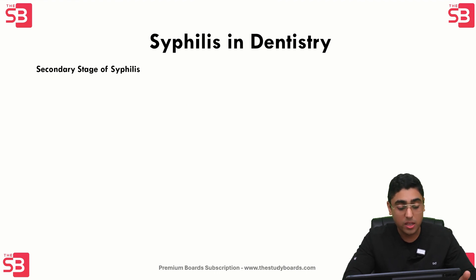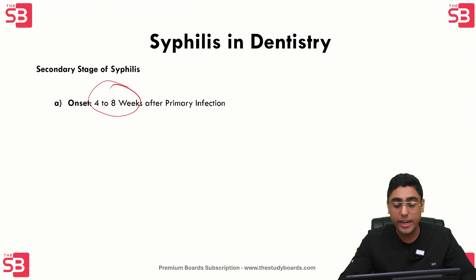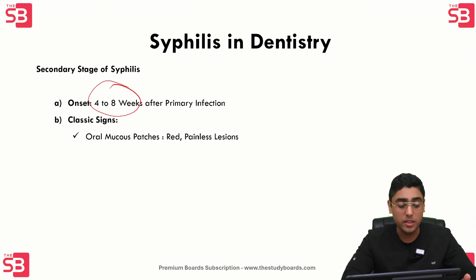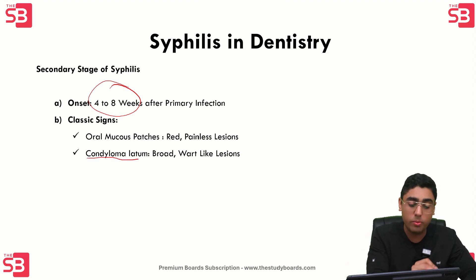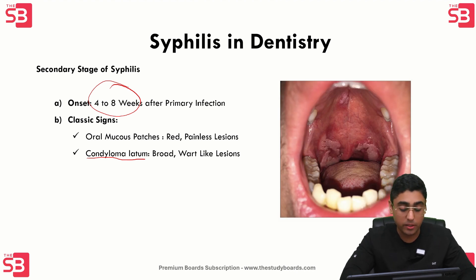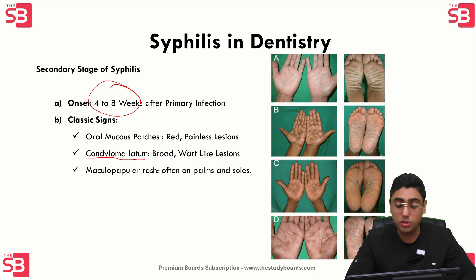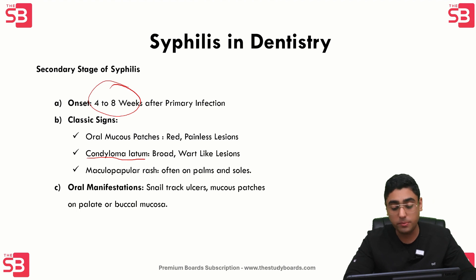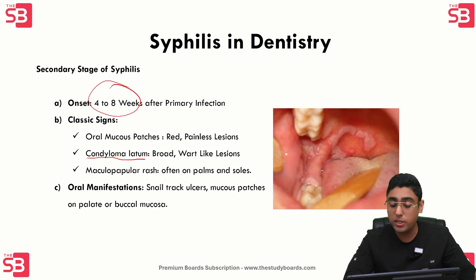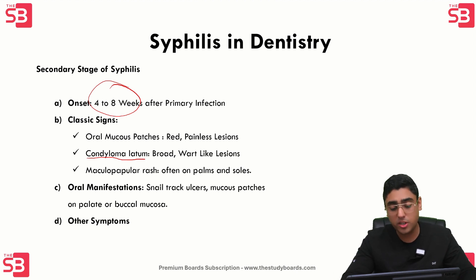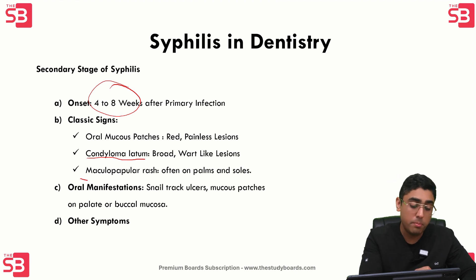In secondary syphilis, the onset is four to eight weeks after the primary infection. There are three classical signs: first, oral mucus patches — these are red, painless lesions; second, condyloma latum, which is a broad wart-like lesion; and third, maculopapular rash, which often occurs on the palms and soles of the patient. Oral manifestations include snail tract ulcers or mucus patches seen on the palate or buccal mucosa. Other symptoms like fever, malaise, and generalized lymphadenopathy can occur, but the most important ones to remember are maculopapular rash and condyloma latum.